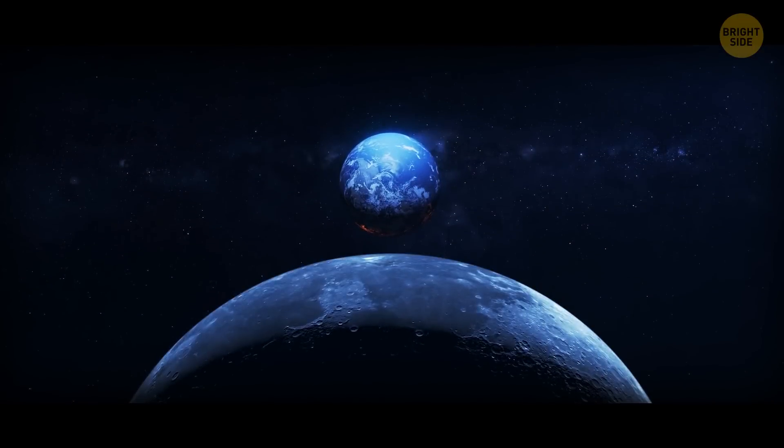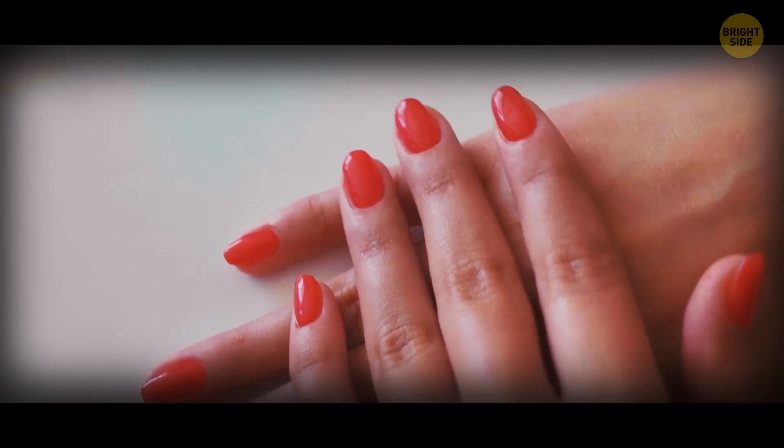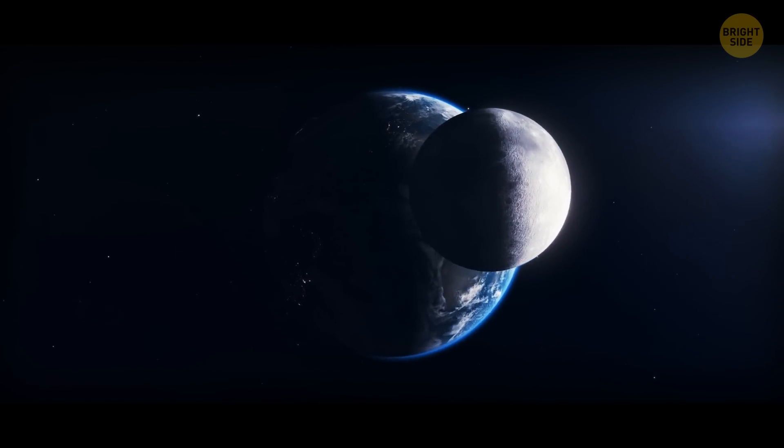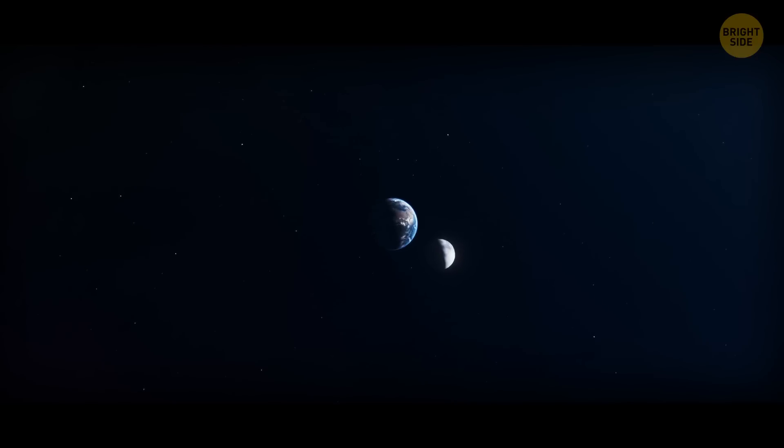The Earth and the moon are gradually drifting apart, as slowly as your fingernails grow. This is the flip side of our satellite's gravitational force. The moon creates tides in the Earth's oceans. They pull back at the moon and make it speed up. This in turn moves the satellite to a higher orbit.